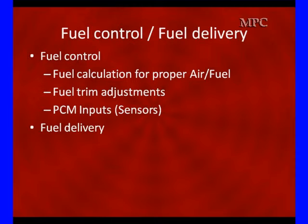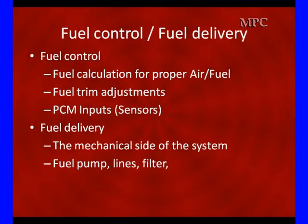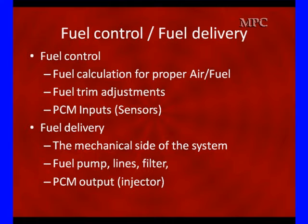The other side is Fuel Delivery — it's the mechanical side of the system: the fuel pump, the lines, the filter, the pressure regulator. Are we getting the right volume? Are we getting the right pressure? If we are, the PCM output commands the injector to be open for a specified amount of time. If that injector opening delivers the wrong amount of fuel, we go back and adjust the fuel trims to return the system to a normal air-fuel ratio, which we'll assume in this program to be 14.7 to 1 for research-grade gasoline.